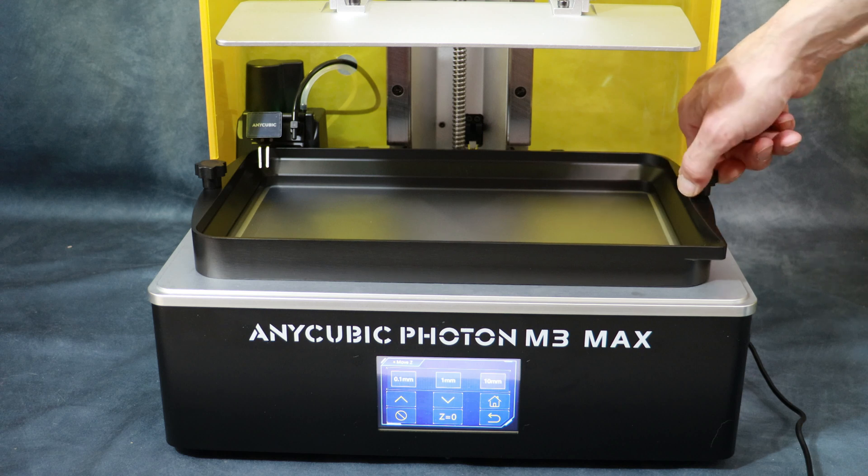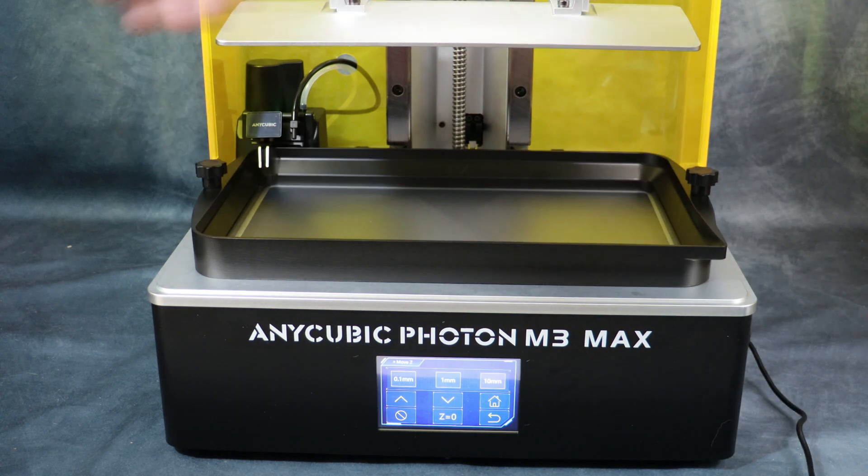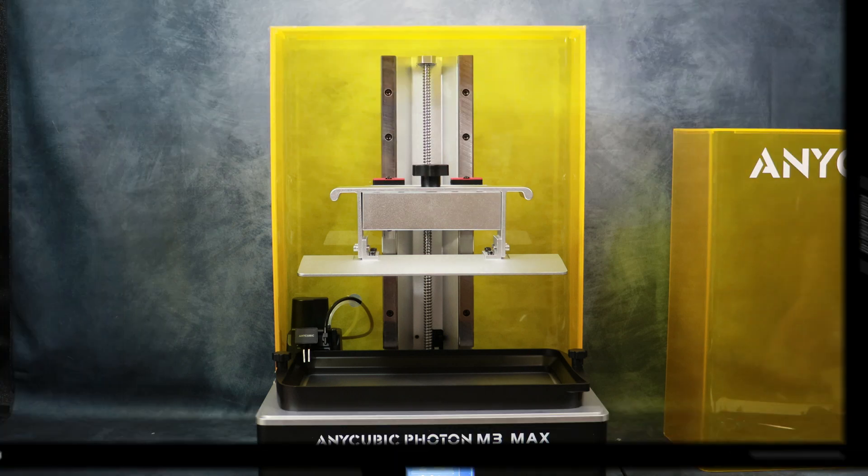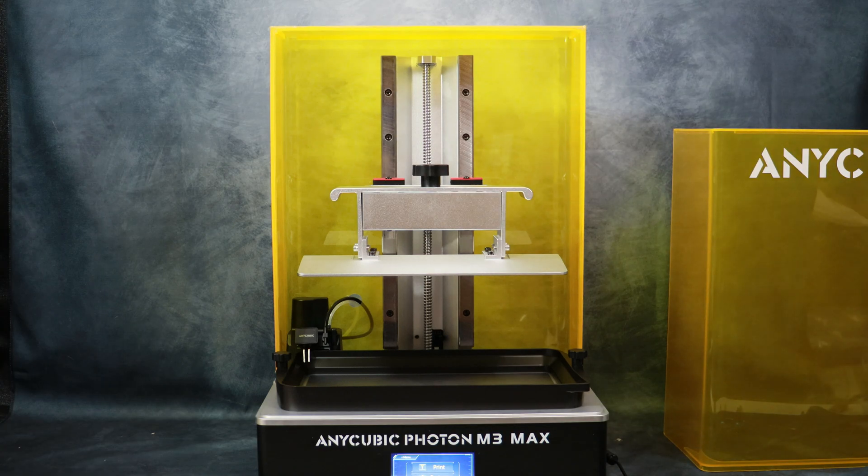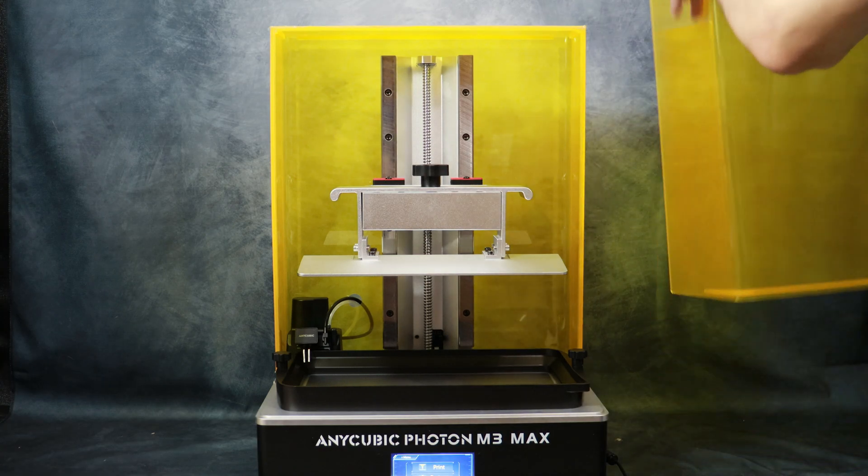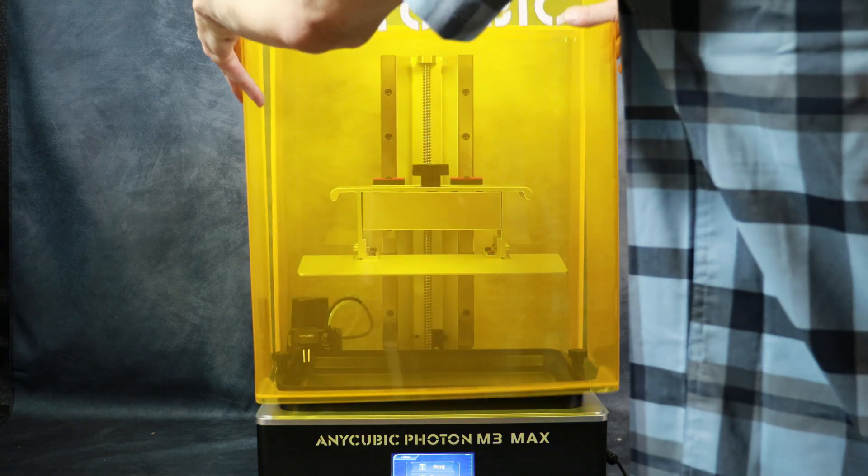Now once the vat is secured in place the next step is to basically load a print and test the printer. Here we are all ready to go. We'll just put the cover back on and we are finished.